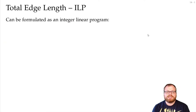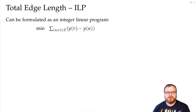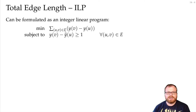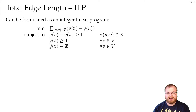Now let's look at minimizing the total edge length. We can formulate a so-called integer linear program (ILP). The target function is the sum over the difference of y-coordinates for all edges. The constraints are: the difference must be at least one for every edge, every vertex has a positive layer number, and all variables must be integers.